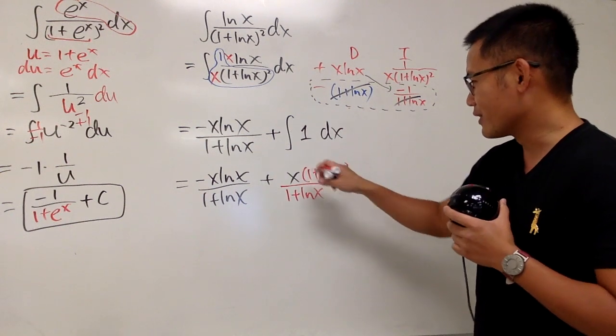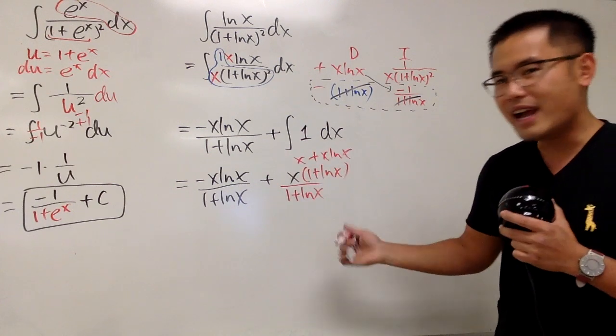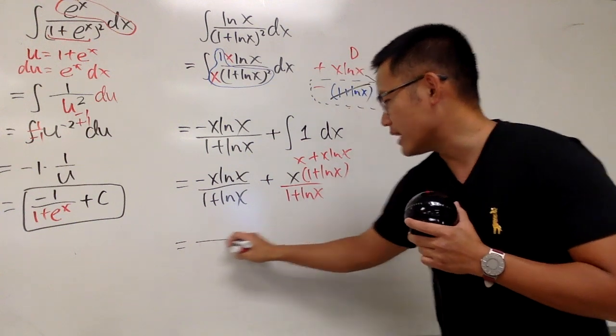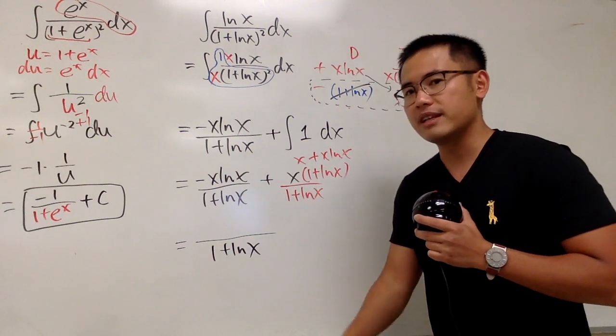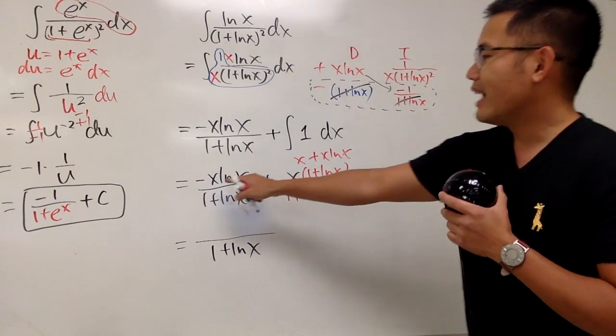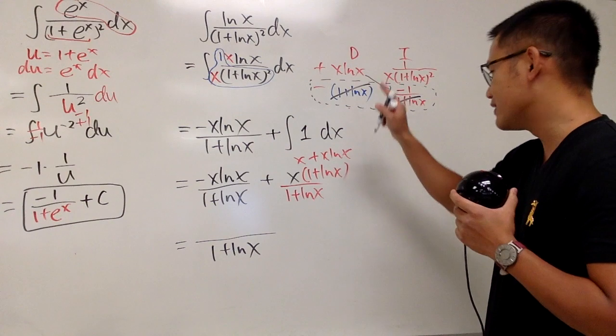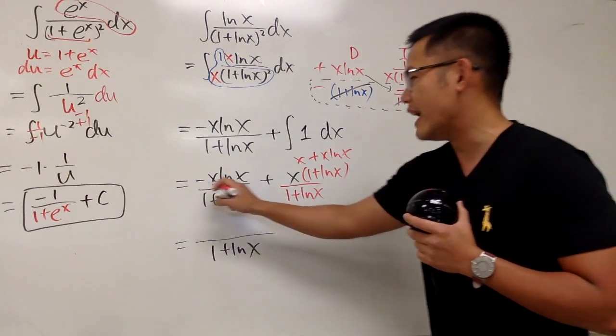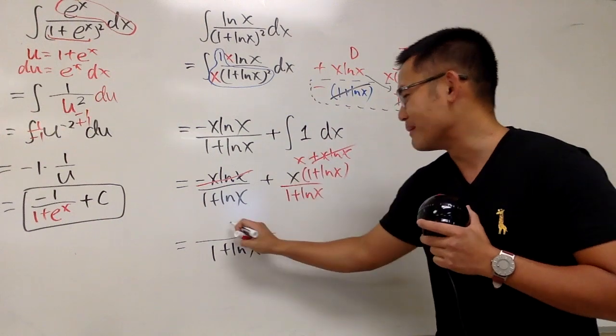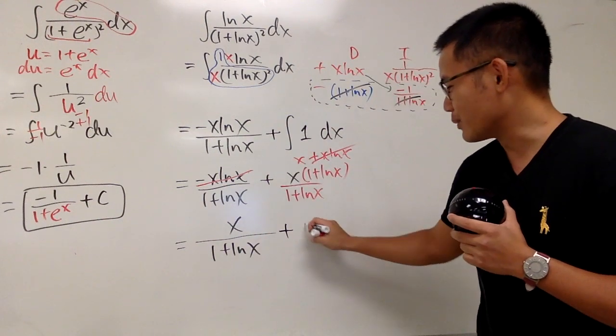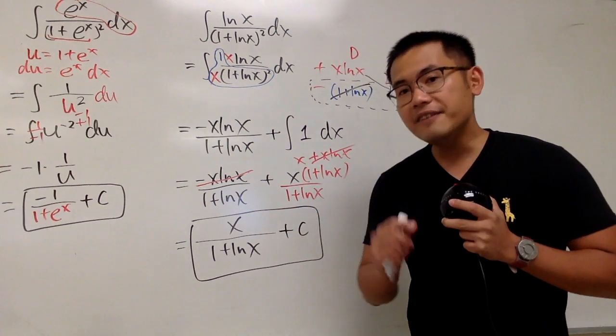Of course, work out the top. This is x. And, this is plus x natural log of x. And, now, everybody has the same denominator. So, we can put them together. 1 plus natural log of x in the denominator. On the top here is negative x ln x. And, this is a positive x ln x. Of course, they cancel each other out. Finally, we just have the x on the top, right here. So, that's pretty much it. So, we put a plus C. And, this is it.